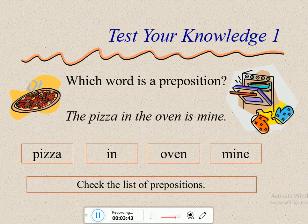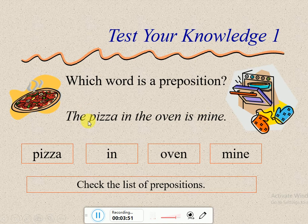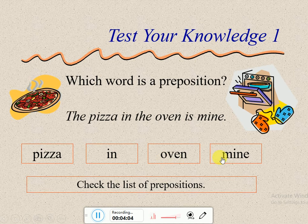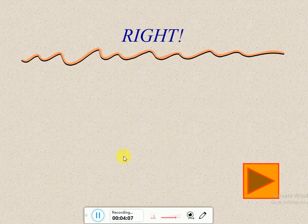Let's test your knowledge. Which word is a preposition? 'The pizza in the oven is mine.' 'The pizza' — no, it's a noun. 'In' — that is the preposition. 'Oven' — noun. So in 'the pizza in the oven,' the word 'in' is the preposition.